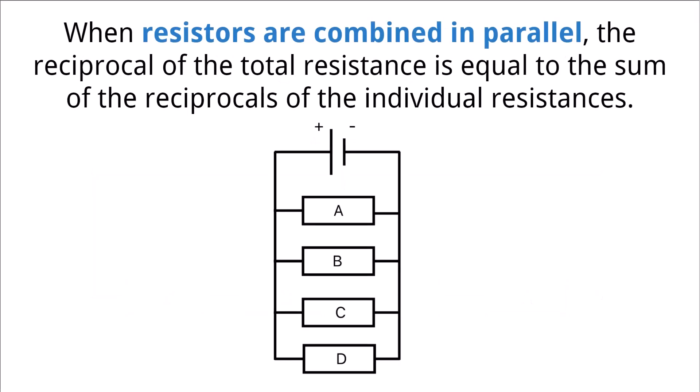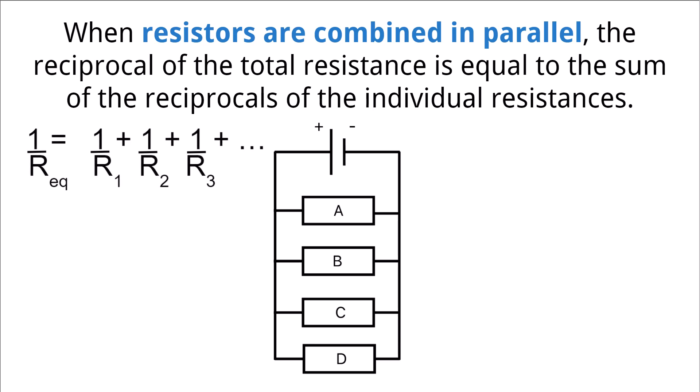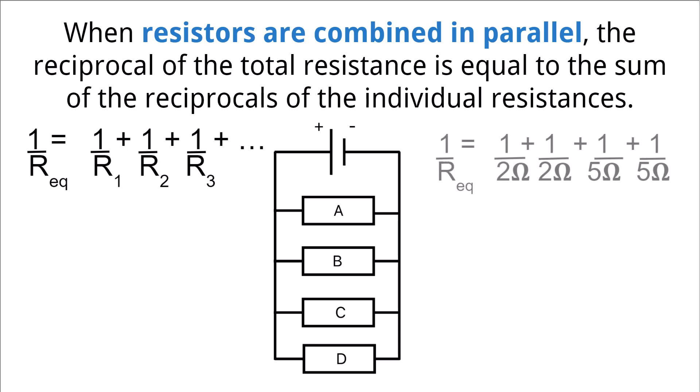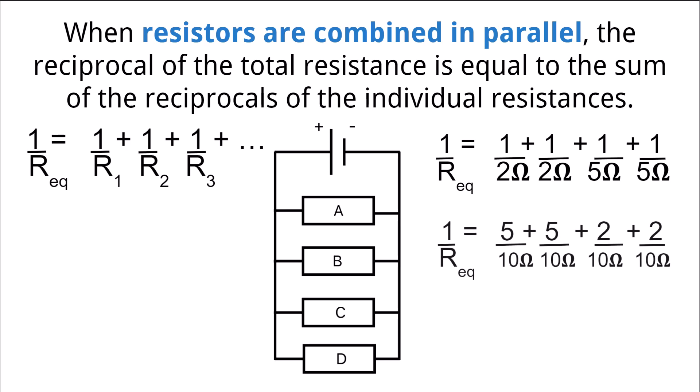In parallel circuits, finding the equivalent resistance is much different. Parallel circuits reduce resistance because of the multiple pathways the electric charge can follow. The equivalent resistance is equal to the sum of the reciprocals of the individual resistances. So if we took the same four resistors A, B, C, and D hooked up in parallel, we first add the reciprocals, giving 14 over 10. Then we take the reciprocal of the answer to get 10 over 14, or about 0.7 ohms — meaning the whole circuit has an equivalent resistance less than each individual resistor.